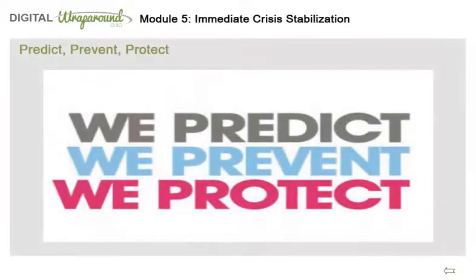We will now introduce the three P's of Crisis Planning. PREDICT: We want to identify the crisis and the contributing factors that lead to the crisis. PREVENT: We want to develop proactive steps to prevent the crisis, or help restore and keep everyone safe.